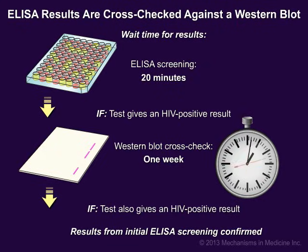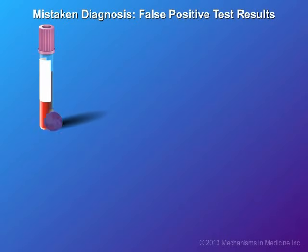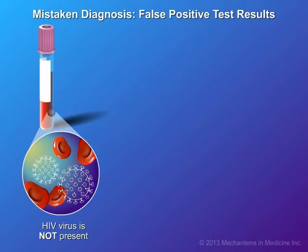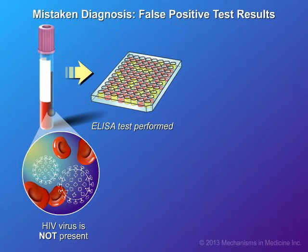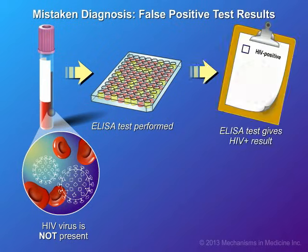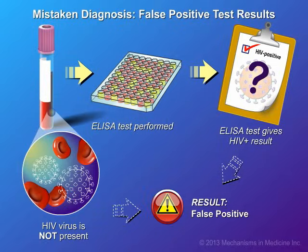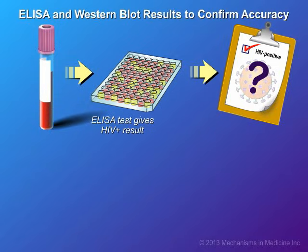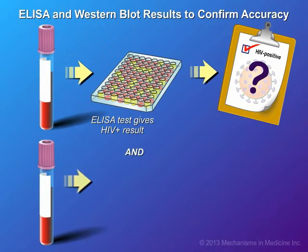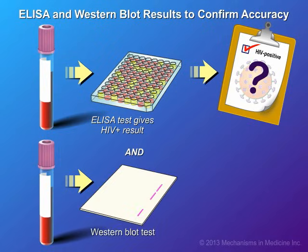Results from a Western blot test are normally available in a week. While the ELISA test is very sensitive for detecting HIV antibodies, on occasion it can lead to the wrong diagnosis. For cases where the ELISA test concludes that you are HIV positive when you actually are not, this is called a false positive test result. Therefore, to double-check the accuracy, another sample will be tested using the Western blot procedure.